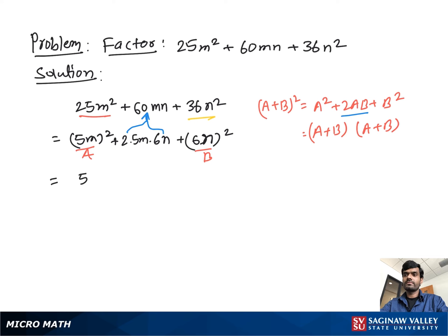Now it looks like a² + 2ab + b² form, then we can write this as (5m + 6n)² or it can also be written as (5m + 6n) times (5m + 6n), and this is our final factor.